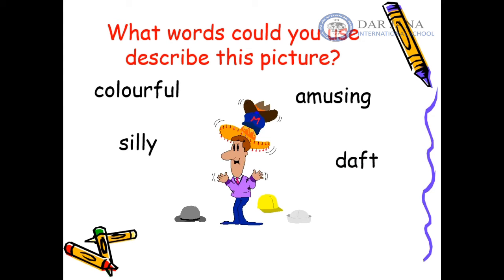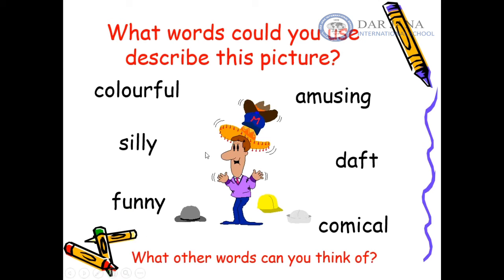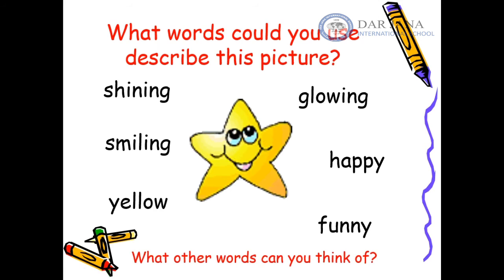What words could you use to describe this picture? We have a colorful character here — we can say he is colorful. We can say he is silly because he is doing silly things with his hands. He is funny because he is wearing lots of hats, and he is amusing — he is making us laugh. We can also say daft and comical. What about this star? We can say it is shining, smiling, yellow, glowing, happy, and funny.